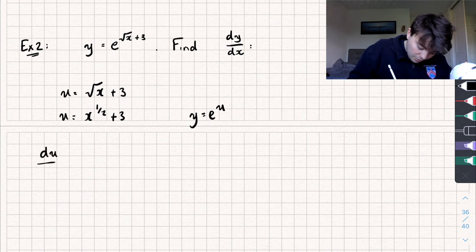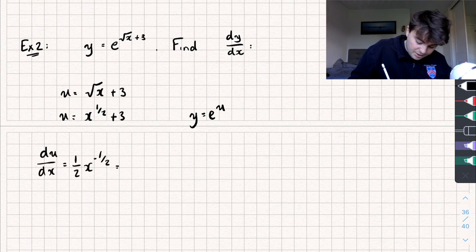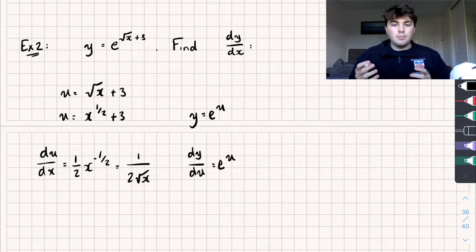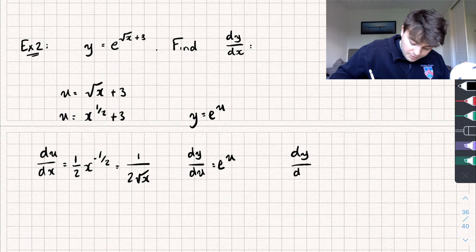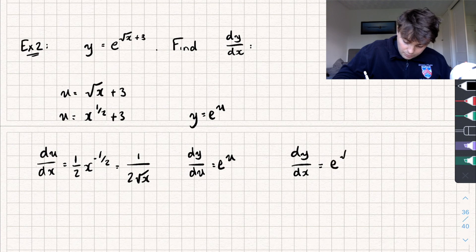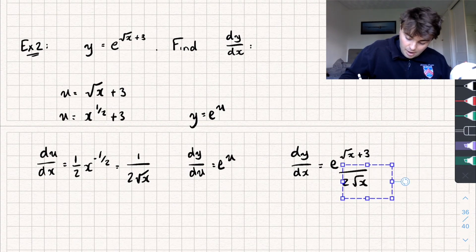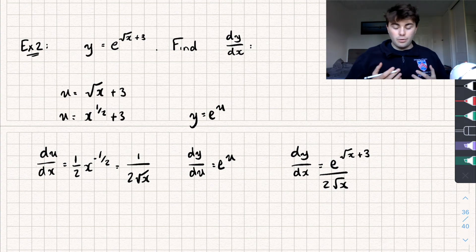We take the derivative of u with respect to x and we get one half x to the negative half, which is the same as 1 over 2 square root x. Then dy by du is just equal to e to the u. Multiplying these together, dy by dx equals e to the power of square root of x plus 3, multiplied by 1 over 2 root x, which is the same as e to the power of the square root of x plus 3, all over 2 root x.